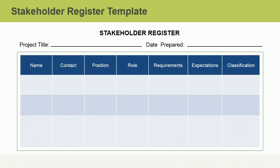Assessing information includes stakeholders' key requirements and expectations. This tells you what you need to know to make judgments about how to treat stakeholders to keep them satisfied and engaged with the project. Much of this information is gathered during step two: gathering information from organizational process assets and enterprise environmental factors.